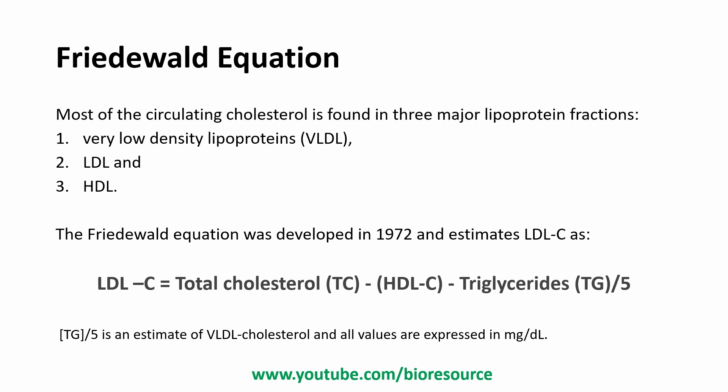Most of the circulating cholesterol is found in three major lipoprotein fractions: VLDL (very low density lipoprotein), LDL (low density lipoprotein), and HDL (high density lipoprotein). The Friedewald equation, developed in 1972, estimates LDL cholesterol as: LDL-C = Total Cholesterol − HDL-C − (Triglycerides / 5). The triglycerides divided by 5 is an estimate of VLDL cholesterol, and all values are expressed in mg/dL.